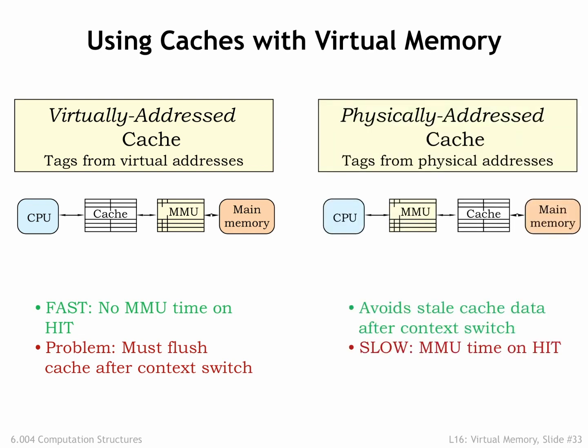We can solve this problem by caching physical addresses — in other words, placing the cache between the MMU and main memory. Thus the contents of the cache are unaffected by context switches; the requested physical addresses will be different, but the cache handles that in due course. The downside of this approach is that we have to incur the cost of the MMU translation before we can start the cache access, slightly increasing the average memory access time.